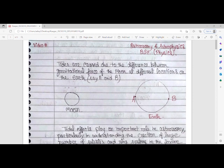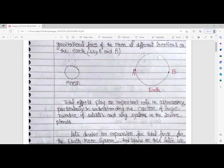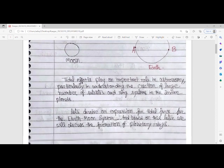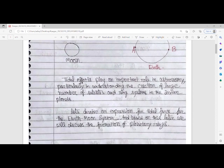The difference in gravitational forces between two points on Earth causes the tides. Tidal effects play an important role in astronomy, particularly in understanding the creation of large numbers of satellites and ring systems in the Jovian planets, for example Jupiter, Neptune, and Uranus.